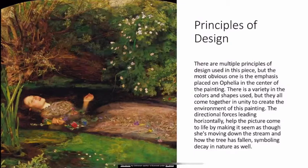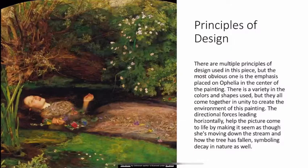There are multiple principles of design used in this piece, but the most obvious one is the emphasis placed on Ophelia in the center of the painting. There is a variety in the colors and shapes used, but they all come together in unity to create the environment of this painting. The directional forces leading horizontally help the picture come to life by making it seem as though she is moving down the stream, and the fallen tree symbolizes decay in nature as well.